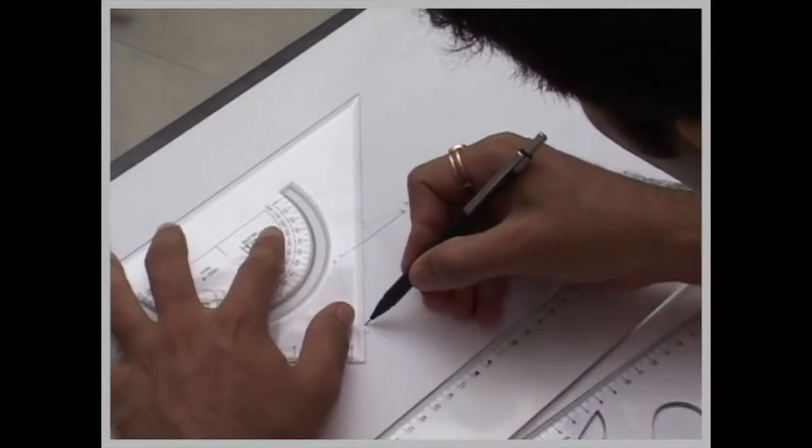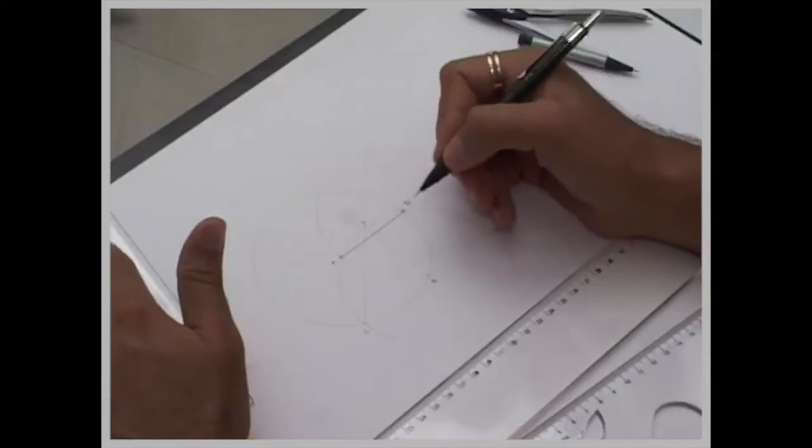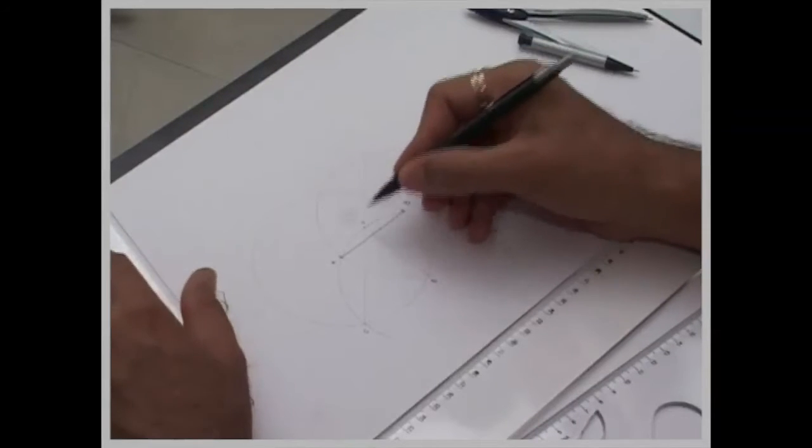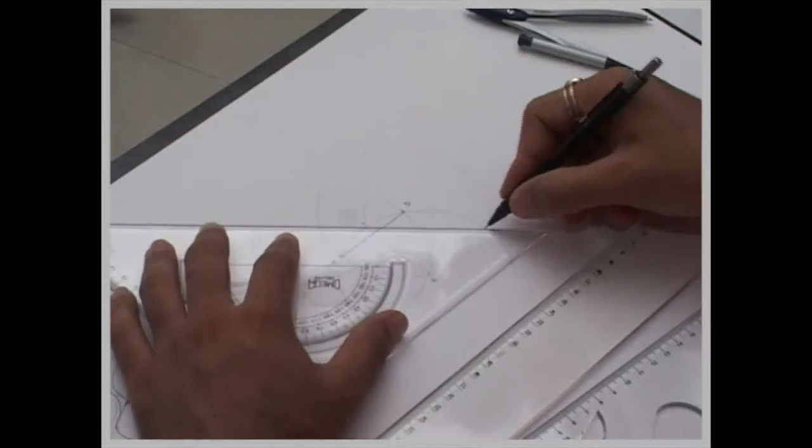Now join C to F and extend the line. Now remember this. This is the most common error. Instead of passing through the upper point, they will draw a line passing through the lower point. Always remember, whenever you are drawing a line, it should pass through the upper point.